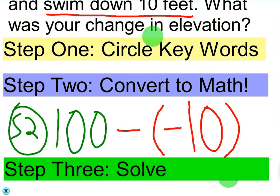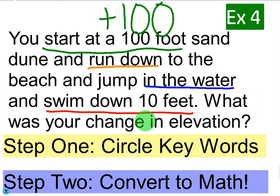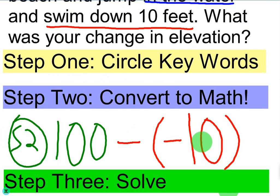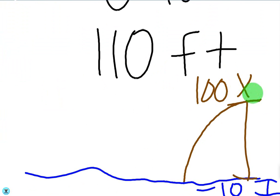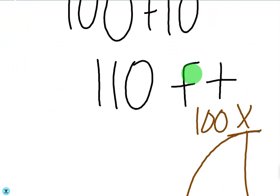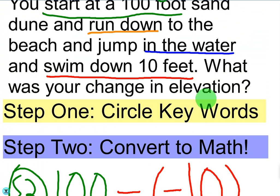We've circled our keywords, so now we convert to math. Our starting elevation is 100 and our final elevation is negative 10. Just like climbing the mountain, except our final elevation is negative — we still take the bigger and subtract the smaller. So it's 100 minus negative 10, which is 100 plus 10, which is 110 feet. The picture confirms that: if we start at 100 feet, we go down 100, then 10 more — we dropped 110 feet total. The answer to 'what was your change in elevation' is 110 feet, or you dropped 110 feet.